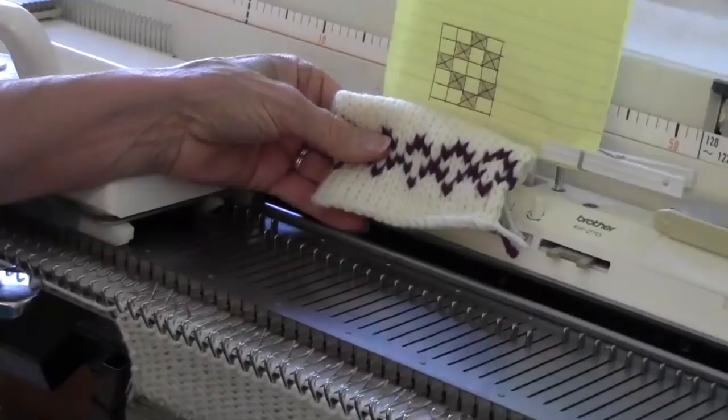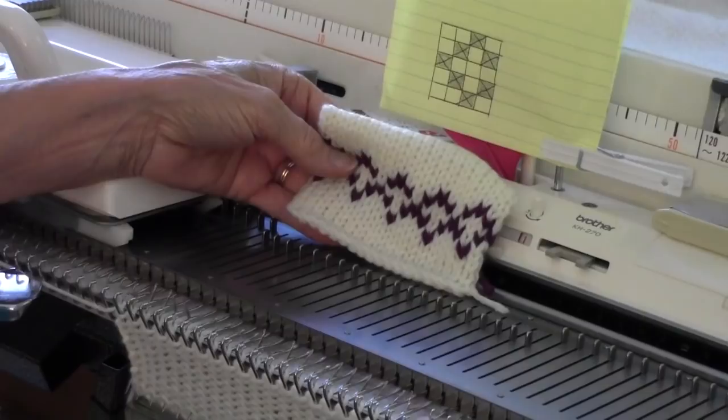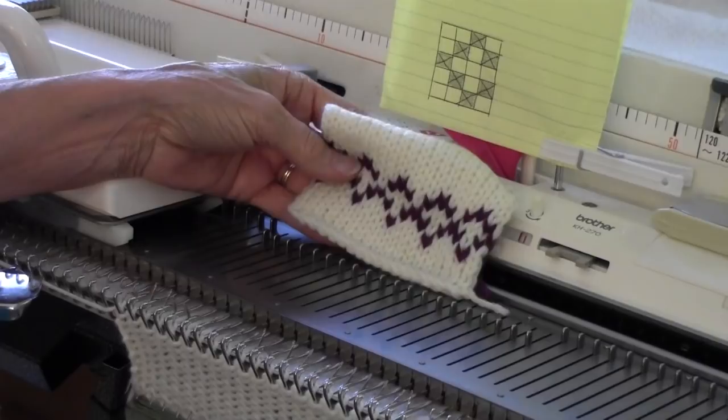This Fair Isle on the sample I just showed you is diagrammed here on a piece of scratch paper. It is four stitches wide and repeats across as far as you want to pick out needles, and it is five rows tall.